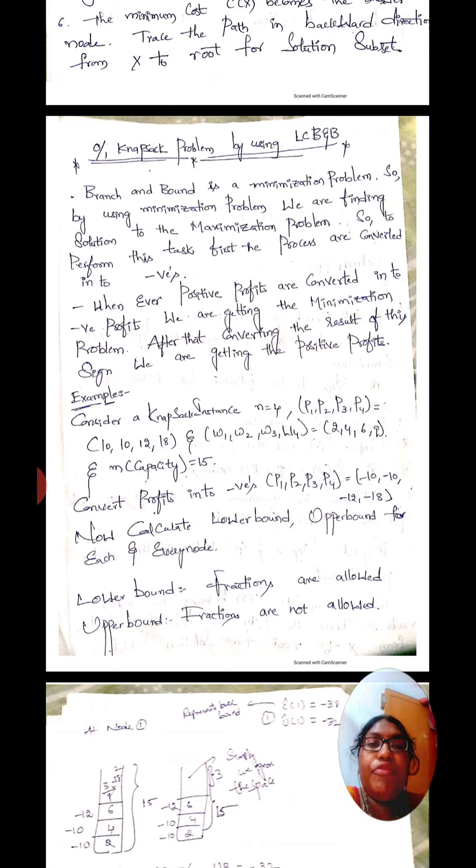First, the profits are converted into negatives. Whenever positive profits are converted into negative profits, we are getting the minimization problem. This is the main objective here.